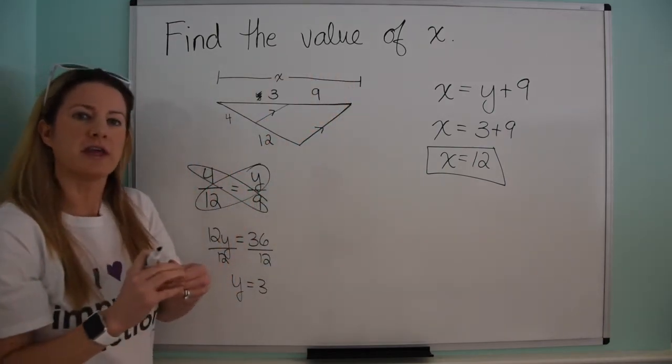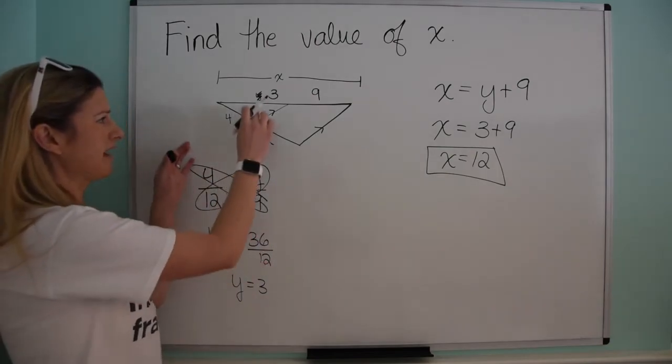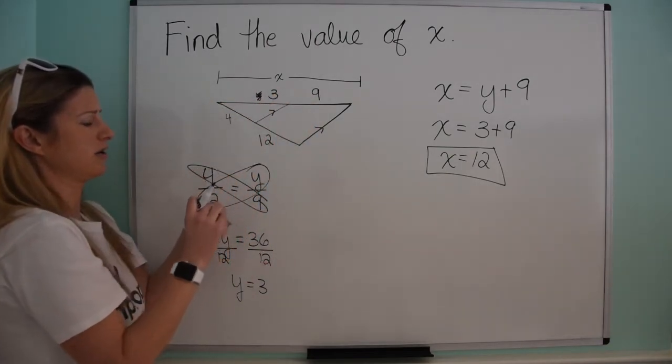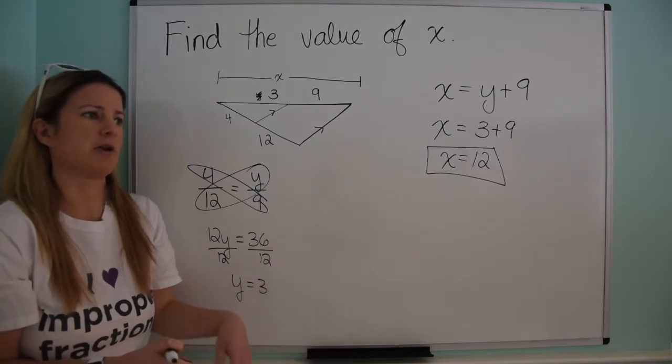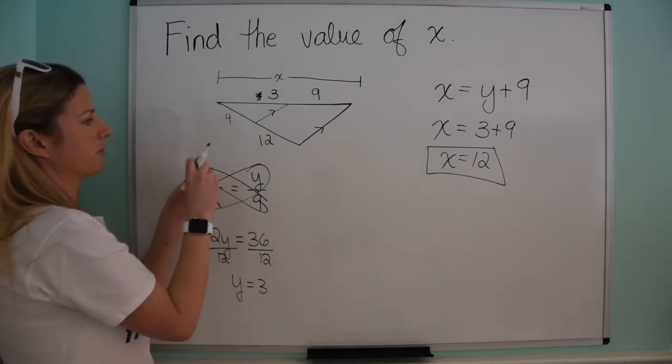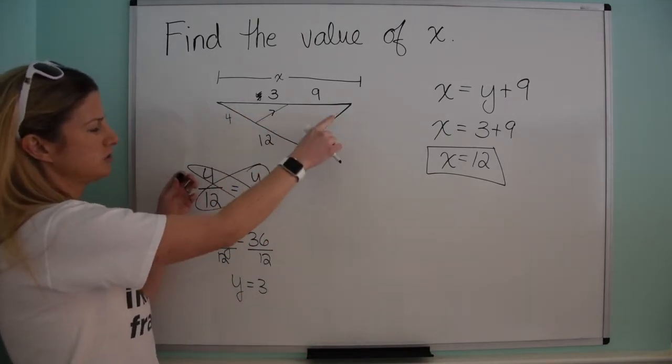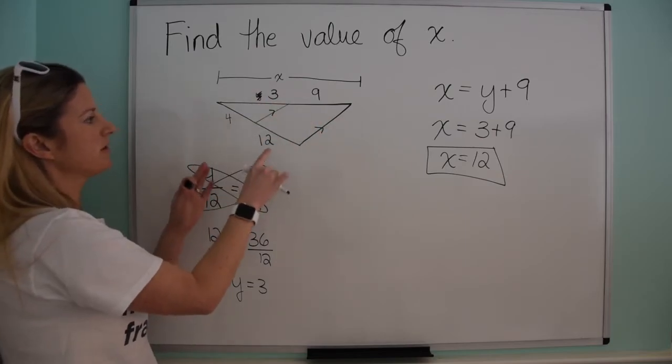But as you can see, how I want you to think about it is, if I can get every single piece, if I think about it, problems that involve the side splitter theorem, for example, I've got four pieces. I've got two on this side, two on this side. And if I can just find all four, then I can find anything.